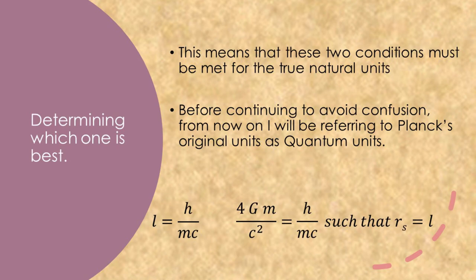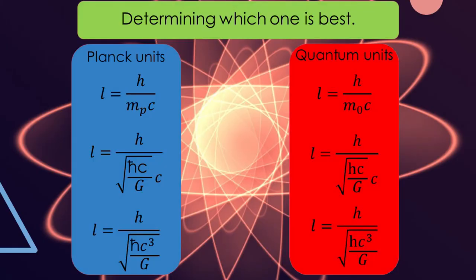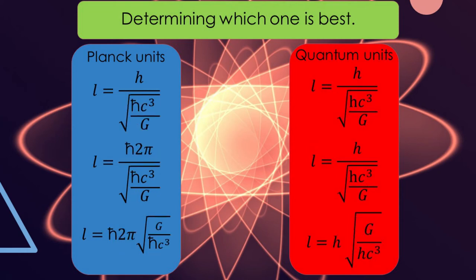Before continuing, to avoid confusion, I will be referring to Planck's original units as quantum units. We start with the wavelength formula, substitute in the formula for the unit of mass, and simplify. The Planck unit side requires converting Planck's constant into the reduced Planck's constant, while the quantum unit side remains unchanged. We then flip the radical, resulting in the final version on both sides.